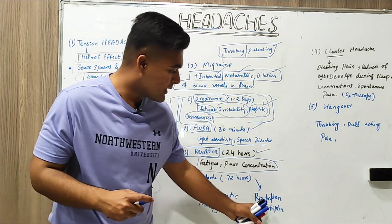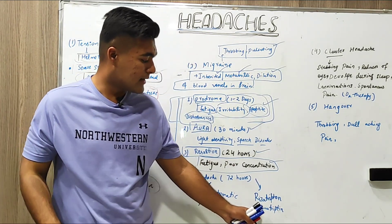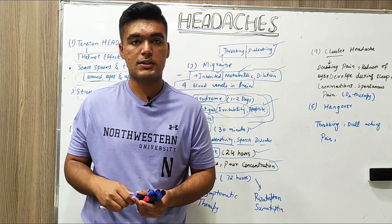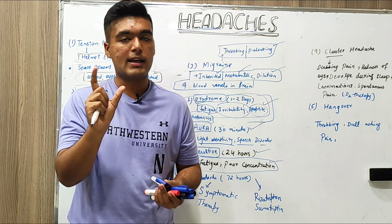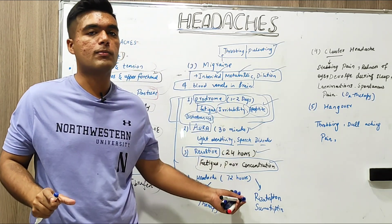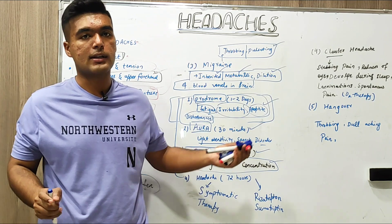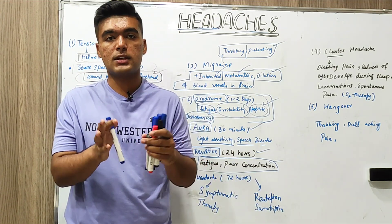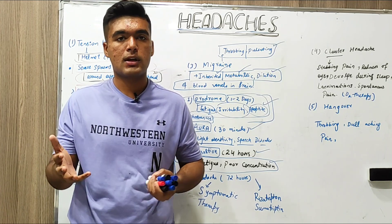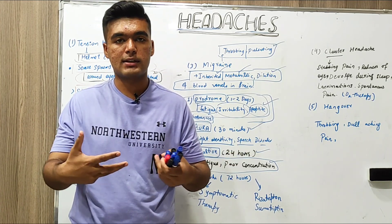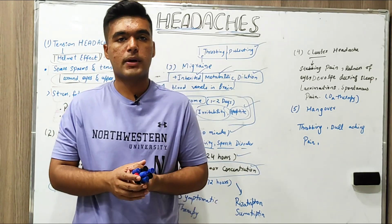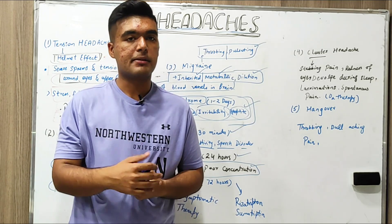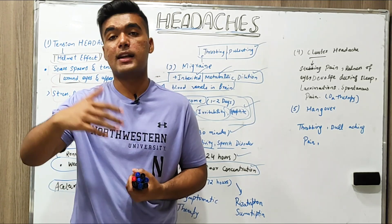Treatment for migraine is basically triptans such as sumatriptan, but again, we must consult with a physician if you identify you have this form or this stage of migraine. These are the medications we often take, but your physician will examine and may investigate other causes also contributing to migraine, and will eradicate those causes so you have better treatment and a better life ahead.